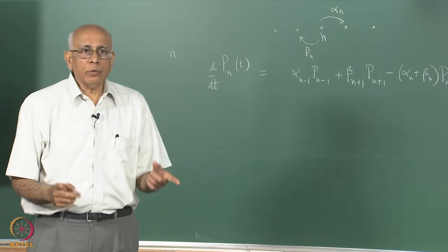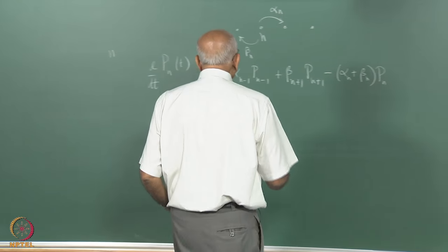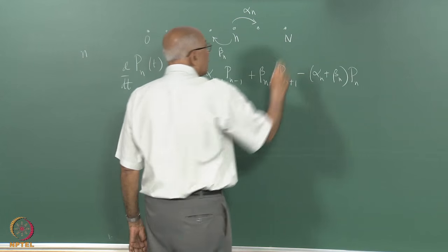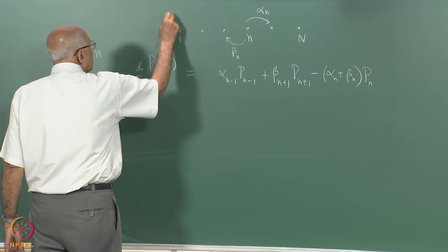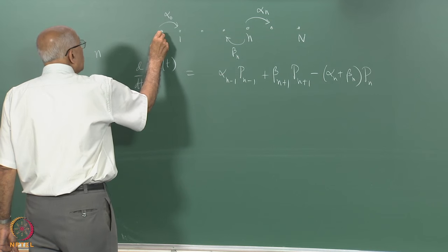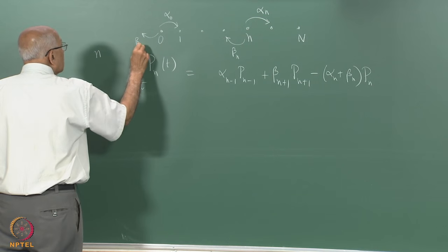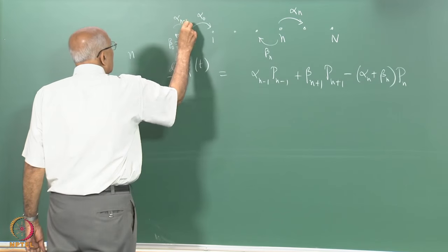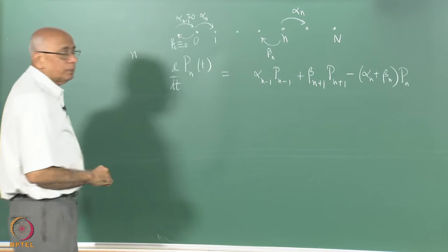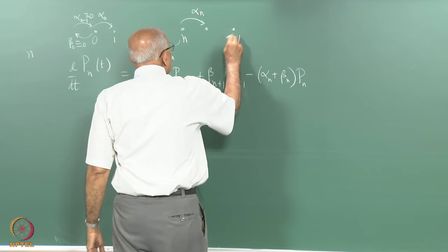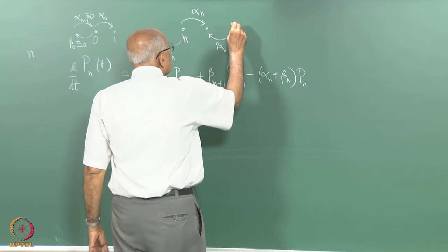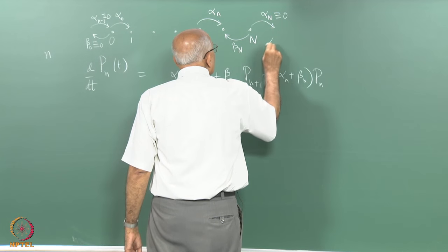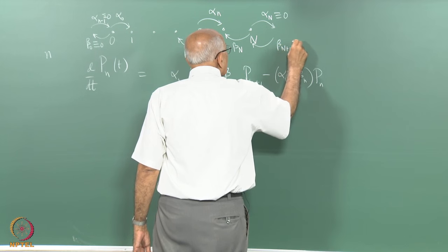If you have boundaries, you need special equations at the boundary points. Suppose the system stops at site 0. Then beta_0 is identically zero, and there is no site minus 1, so that term is absent. Alpha_{-1} is also identically zero. Similarly, at the upper boundary, alpha_N is zero and beta_{N+1} is identically zero.